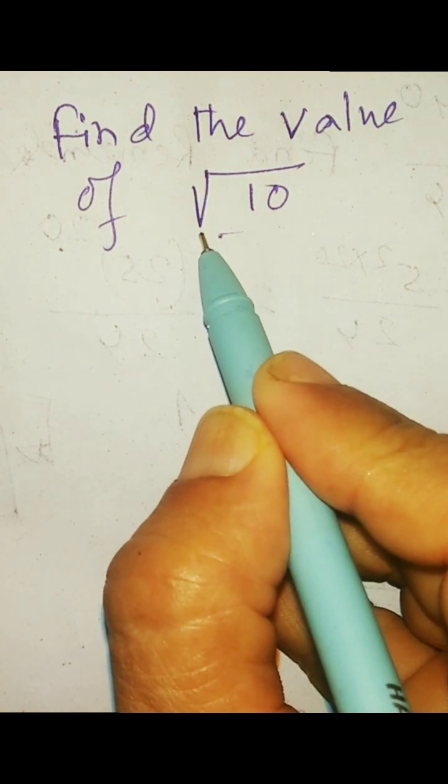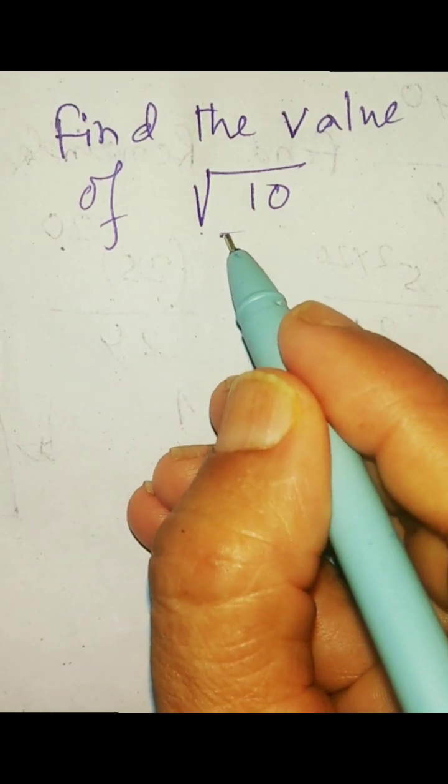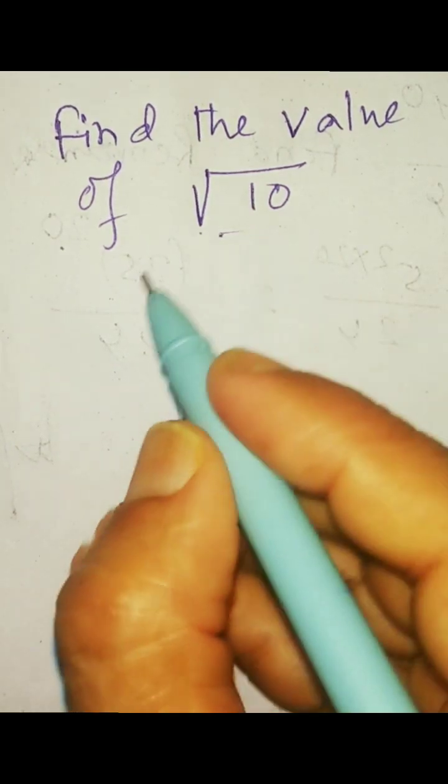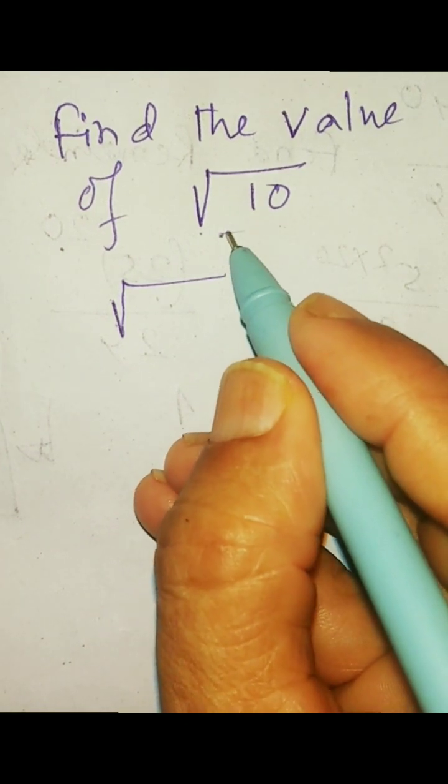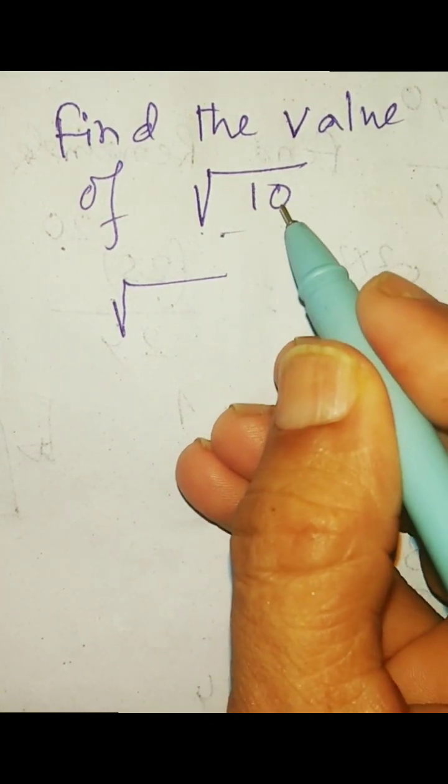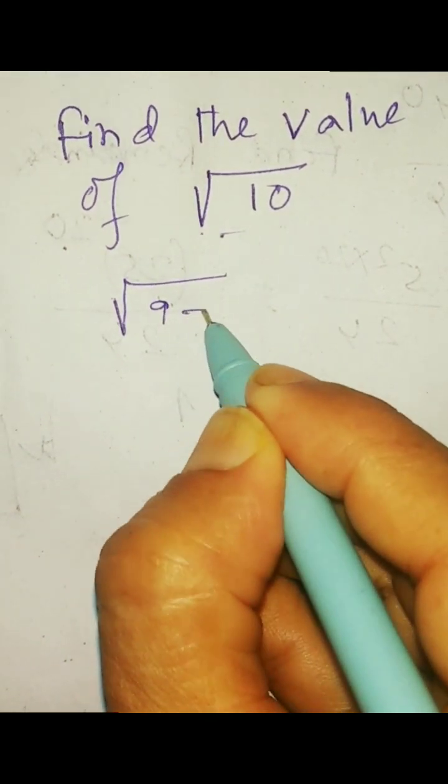To find the square root of root over 10, we will see first what is the perfect square number nearest to 10. Say it is 9 here, because we know 3 squared is 9 and 4 squared is 16. So 3 squared is 9 is the nearest to 10, so we will write it like this way.